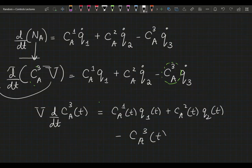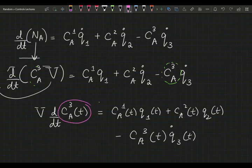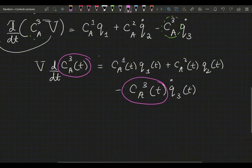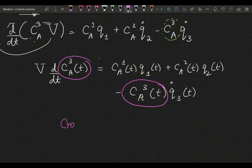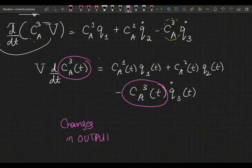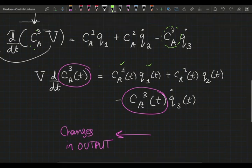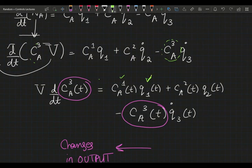So basically what I've written here, the model that I've tried to represent here, captures the changes in the output variable—the output concentration. It's going to capture changes in output based on changes in inlet concentration one, changes in inlet flow rate for stream one, changes in inlet concentration for stream two.